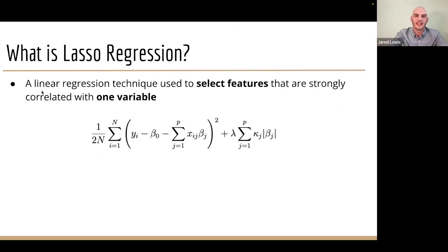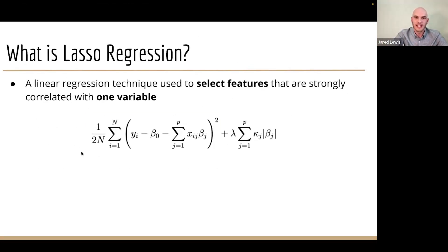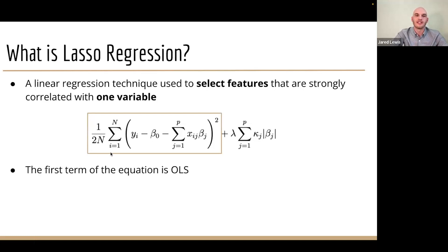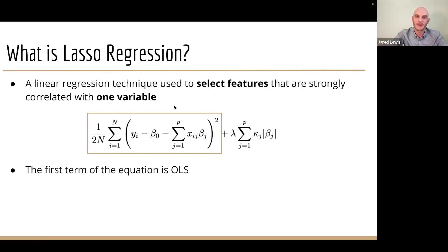What is lasso regression? There are libraries that implement lasso regression in Python — it's a linear regression technique used to select features strongly correlated with one variable. Here is our optimization function: the first term is just our simple OLS, Ordinary Least Squares Regression, where we're trying to minimize our mean square error by selecting the best beta coefficients. The libraries optimize and take care of this under the hood.